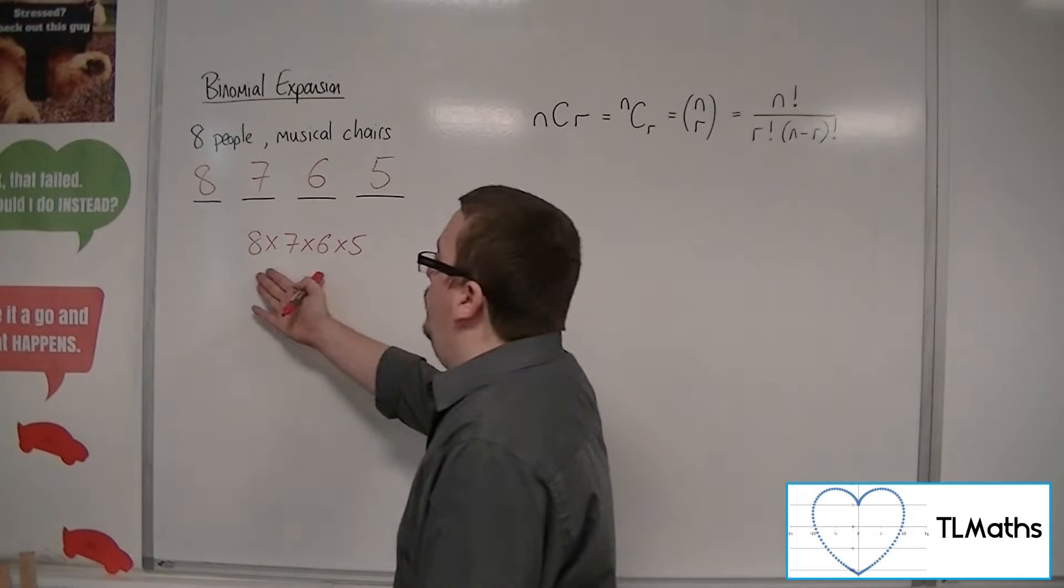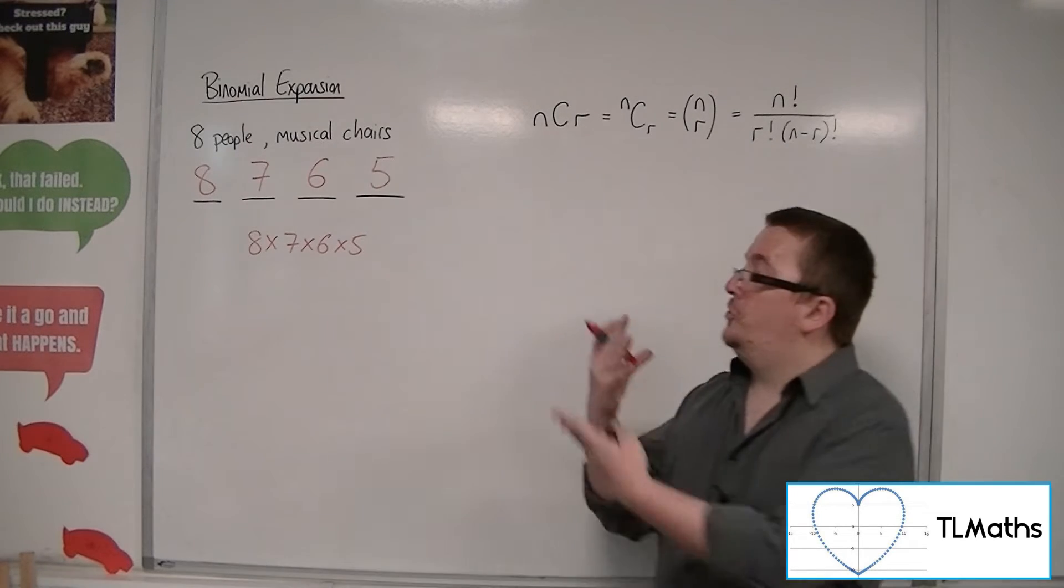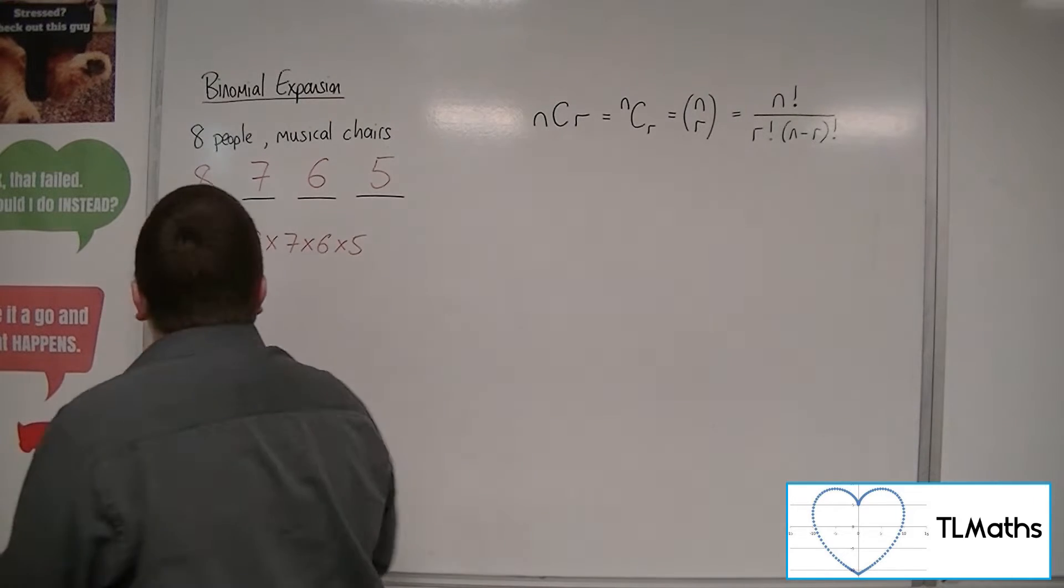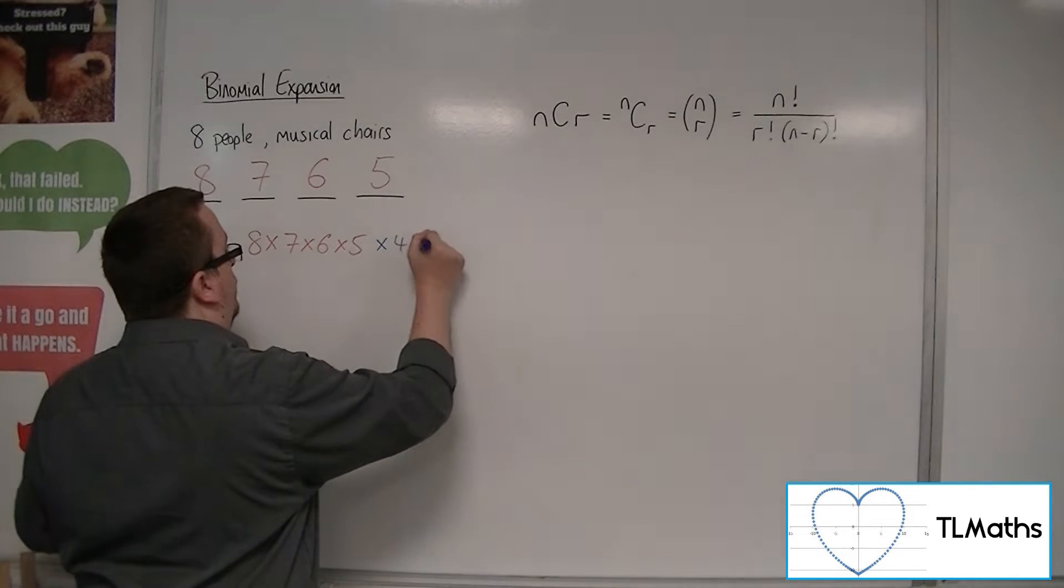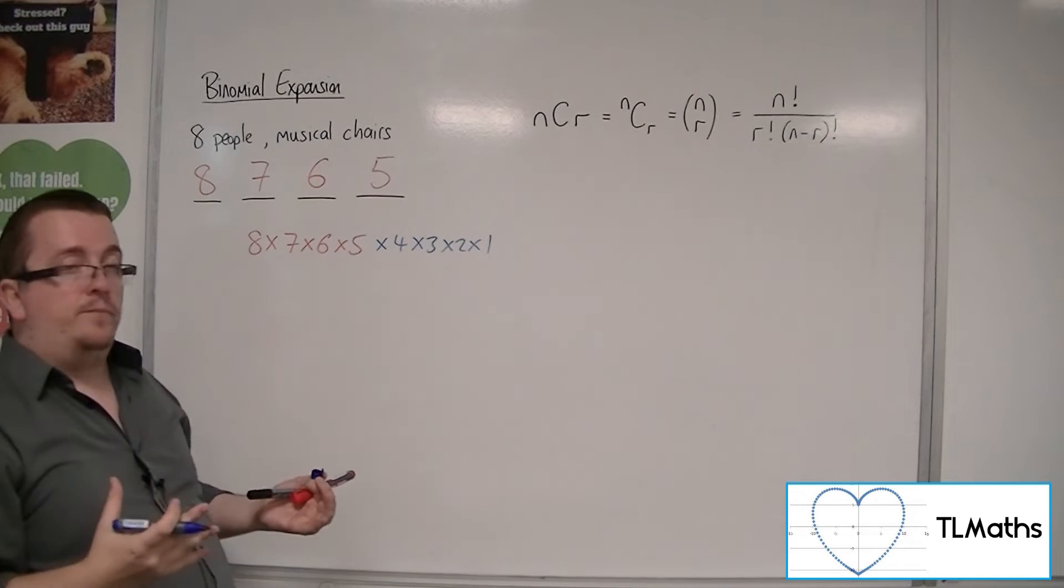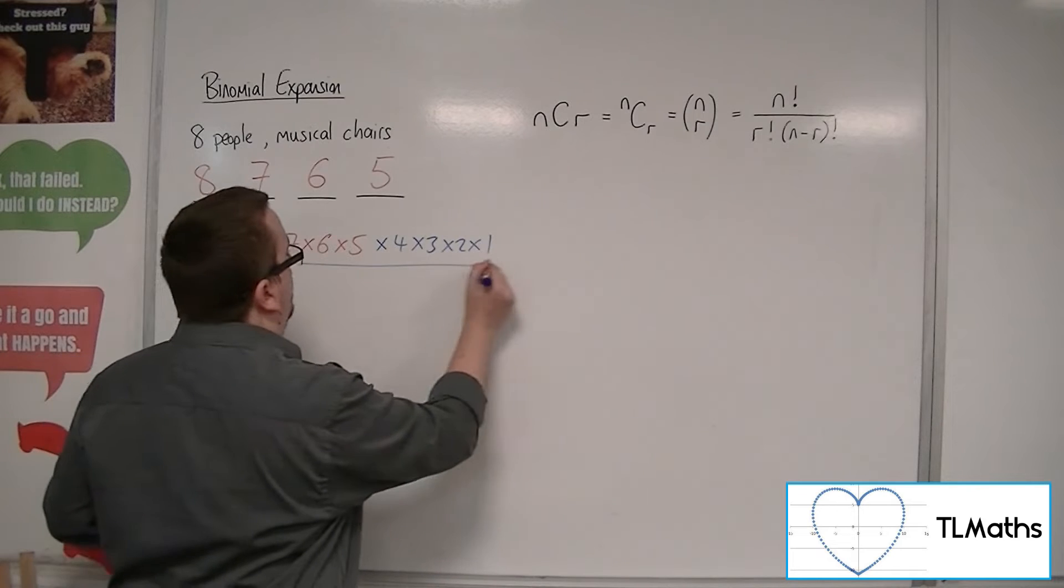Now, this looks very similar to eight factorial. It's just missing that last bit. It's missing that times by four, times by three, times by two, times by one that's on the end. Now, if I'm going to add it to the end, I've got to divide by that number as well.